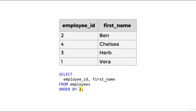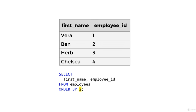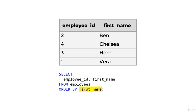Although ordering by column position is possible, it is generally considered bad practice. For example, if at some point we change the order of columns in the SELECT list but forget to update the ORDER BY clause, we'd end up sorting by the wrong column. It is much better to write the name of the column in the ORDER BY clause — for example, ORDER BY first_name — and it will always be ordered by first_name even if we shuffle the columns in the SELECT clause.